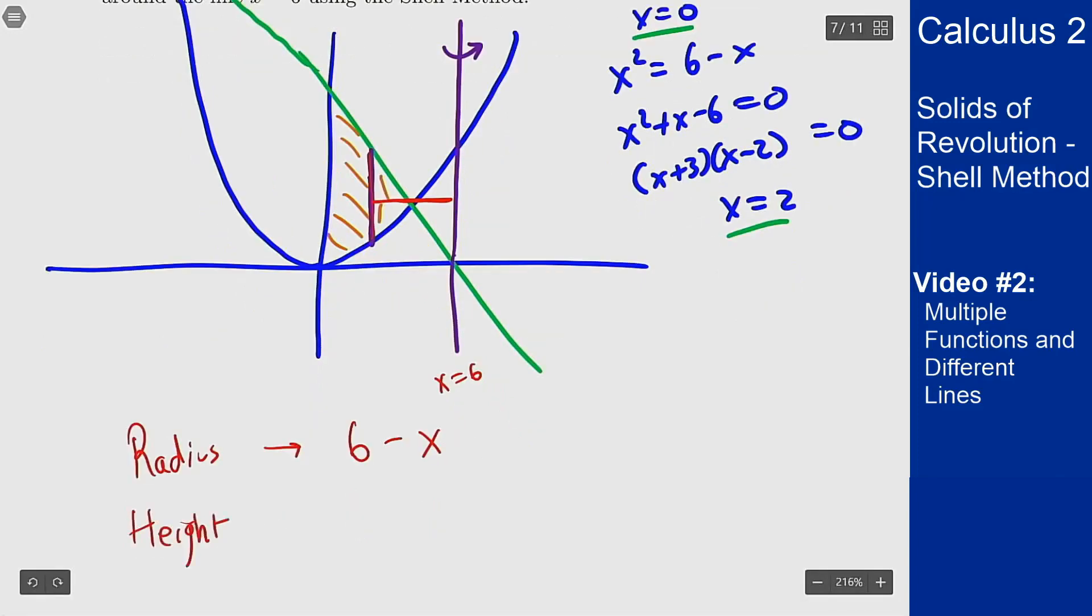The height should be the difference between those two functions at this point. So the height should be the top one which is 6 minus x minus the bottom one which is x squared. So 6 minus x minus x squared is my height.